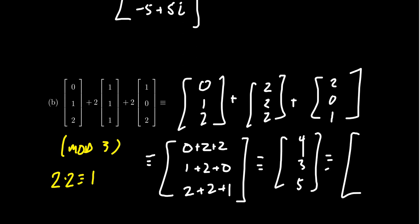And so in the end, 4 reduces to 1 like we saw. 3 would reduce to 0, and 5 would reduce to 2. And so this linear combination would turn out to be the following vector: (1,0,2).